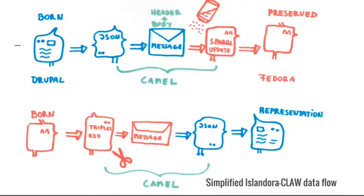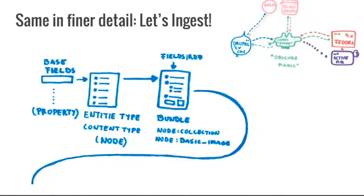Okay. I'm still very in love with doodles. This is a very simple diagram. If something is born on the Drupal site, we make a JSON representation of that. We send it to this obscure camel component. This JSON becomes a message internally, and then it gets transformed with some adding of stuff to a SparkQL update, and it gets preserved finally on Fedora. On the other side, if something is born on Fedora, we get this triples, RBF representation of the forward resource, and it becomes then a message. We strip some stuff out that we don't need on the Drupal site. Then we, on the camel, transform it to JSON, and then we send it back to Drupal, and we have a representation of that.